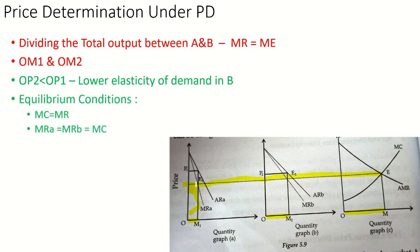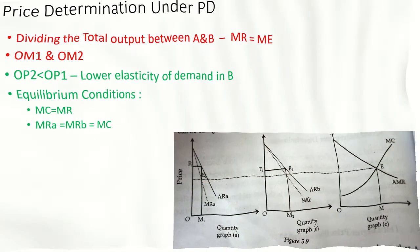The two equilibrium conditions for price discrimination are: MC should equal MR, and MR-A should equal MR-B, which should also equal MC.